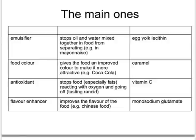These are the main four food additives you need to know about. Emulsifiers, as we've said, stop oil and water from separating out and allow them to mix together — for example in mayonnaise or salad cream. These are found, for example, in egg yolk.